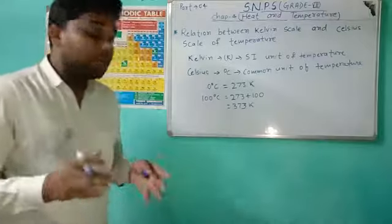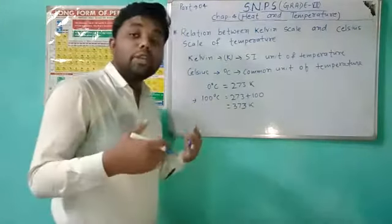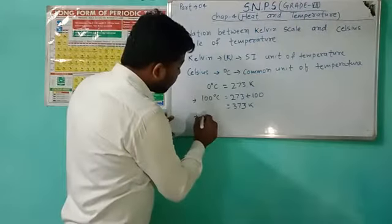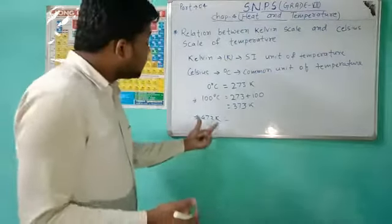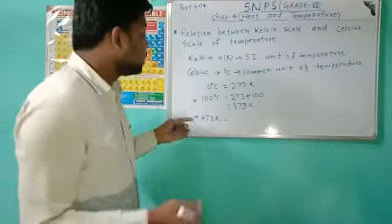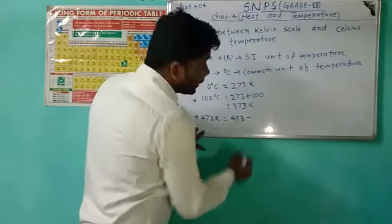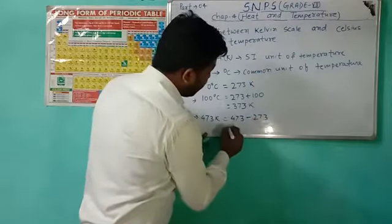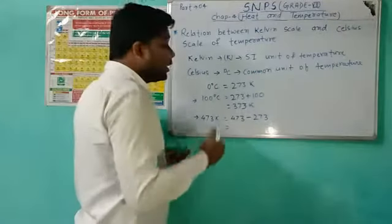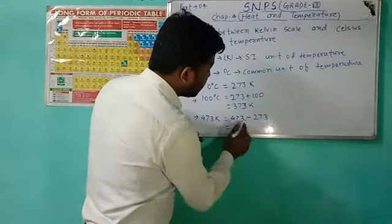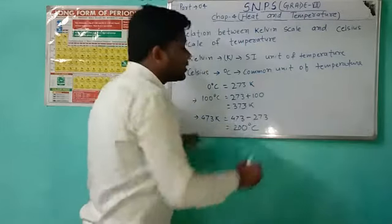Now if we have a temperature in Kelvin — for example, 473 K — and the question is to convert it into degree Celsius, we simply subtract 273 from this quantity. So 473 minus 273 gives us 200 degree Celsius.